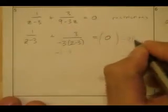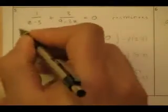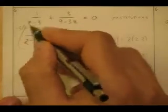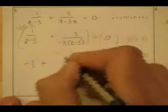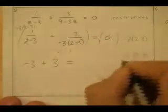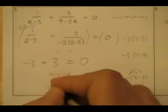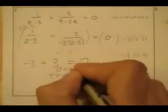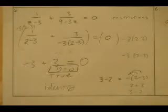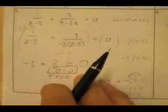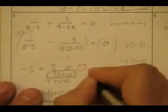I multiply both sides by negative 3 times (z minus 3). For the first term, the (z minus 3) cancels, leaving negative 3. For the second term, the negative 3 times (z minus 3) cancels, leaving plus 3. So I get negative 3 plus 3 equals 0, which gives 0 equals 0 — a true statement always. This is called an identity. But I must remember my restriction: z cannot equal 3, because that makes the denominator zero. So the solution is all real numbers except 3.